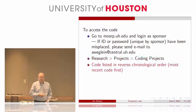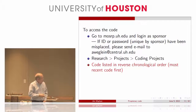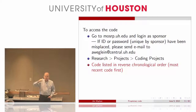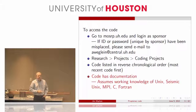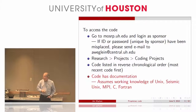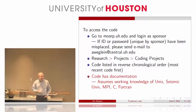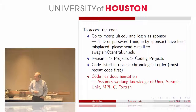What you'll find is a list of code that you can download. The code is listed in reverse chronological order, meaning the most recent code is first, all the way down to the oldest. Each code has documentation, but it assumes that you know Unix, Seismic Unix, MPI, C, and Fortran. The code is written in Fortran, C, or C++, and is run in a Unix environment.